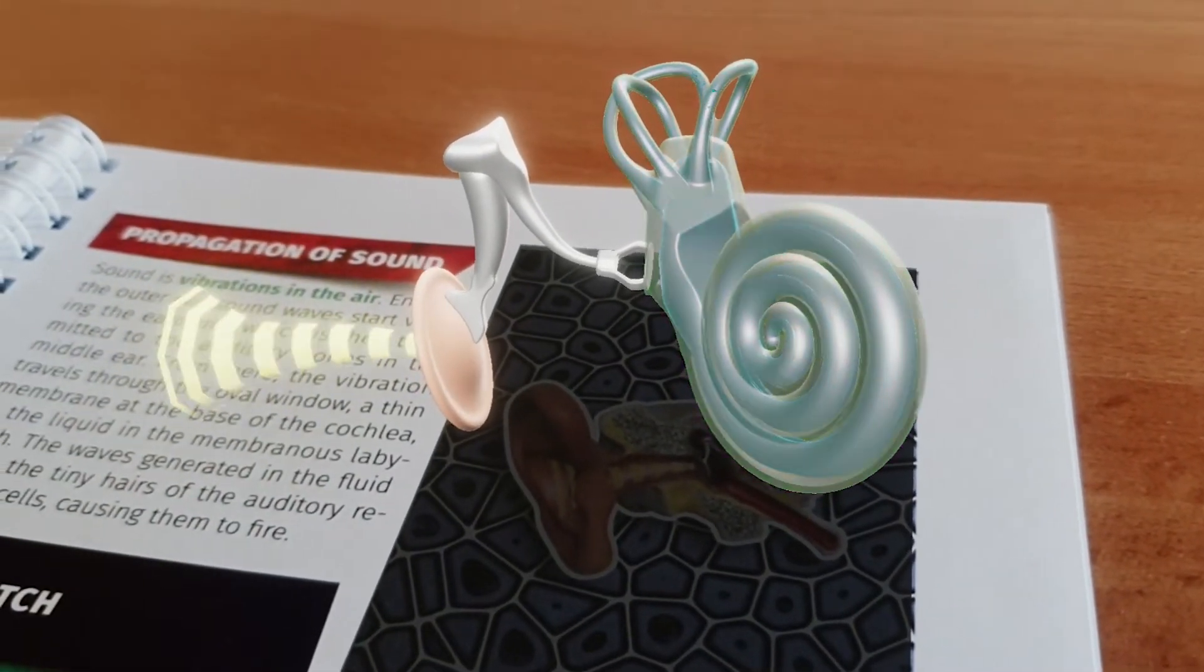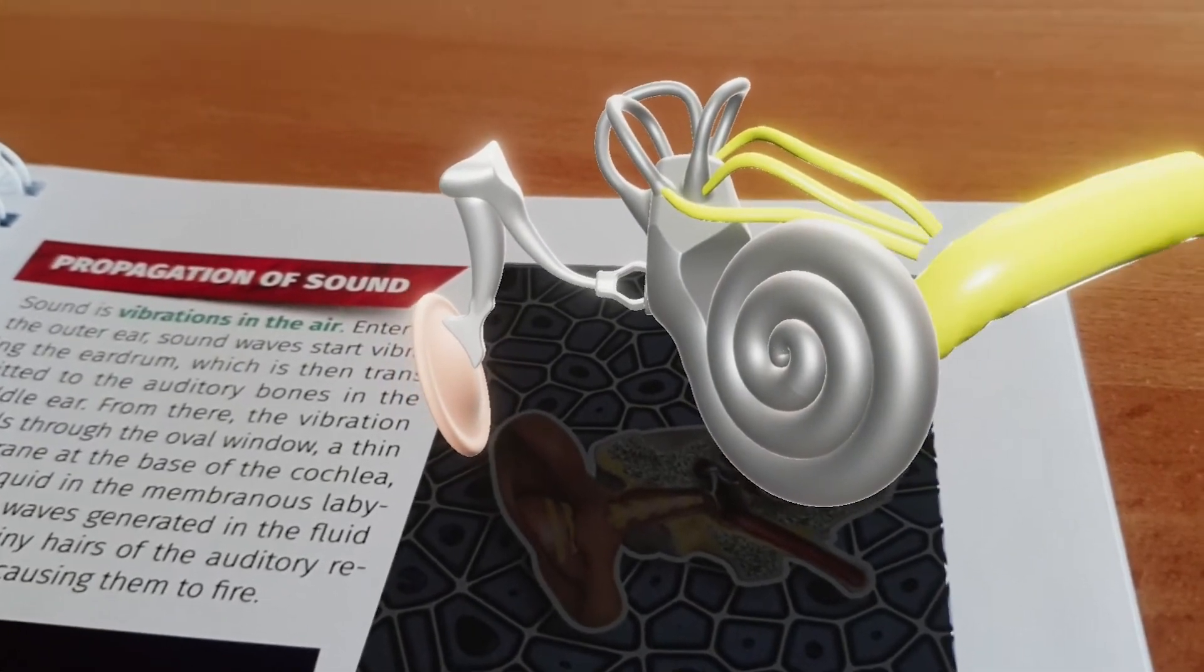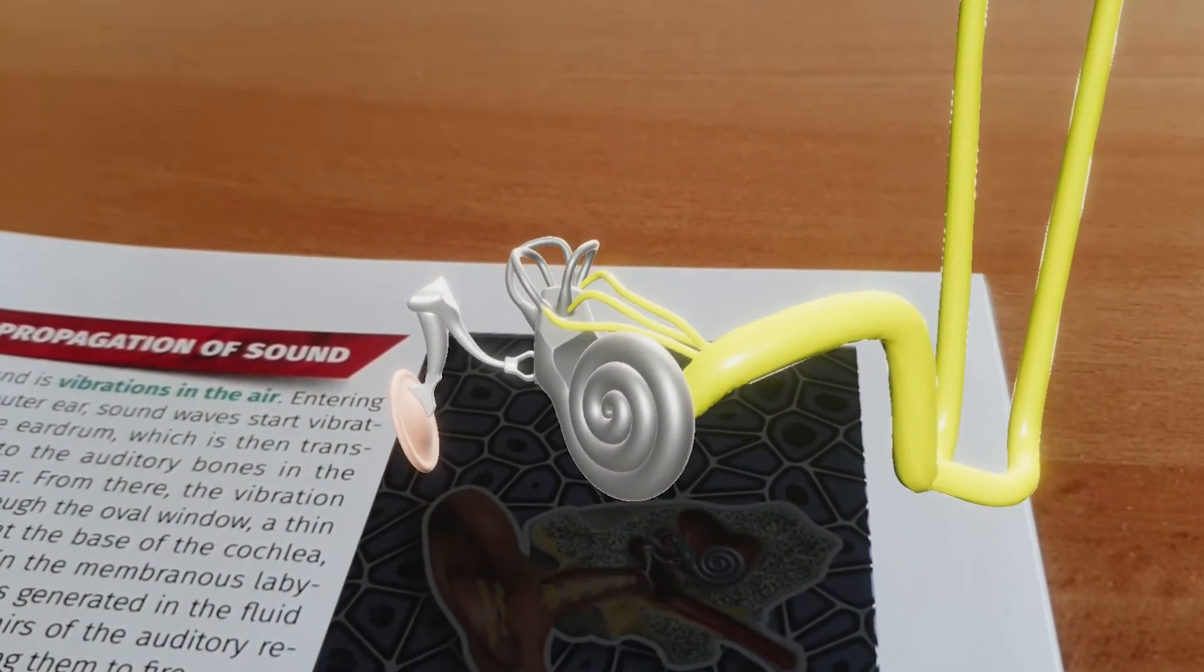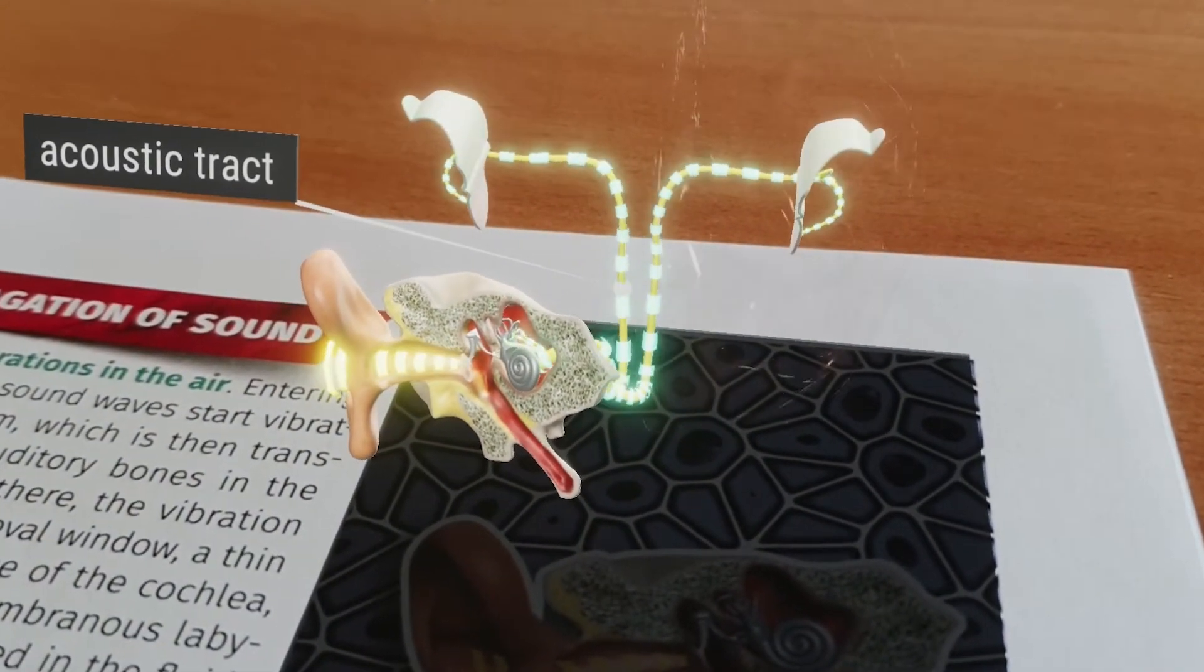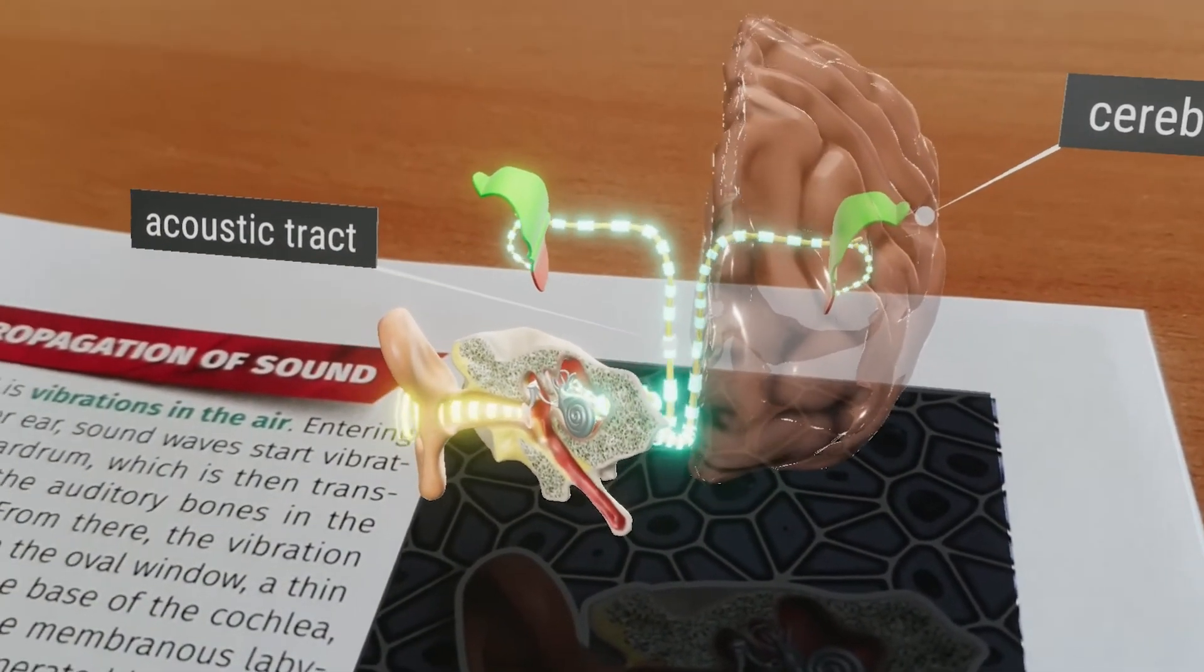This creates a stimulus that is transmitted to the brain through the cochlear nerve fibers and then the acoustic tract. Everything that we hear is interpreted and processed in the cerebral cortex.